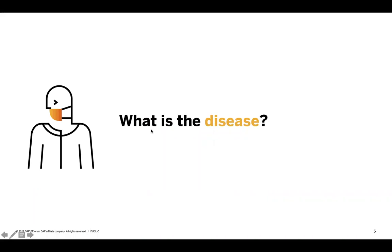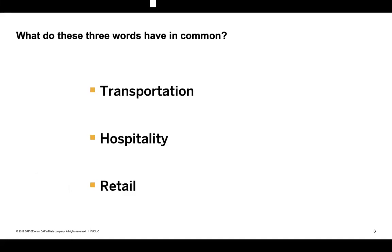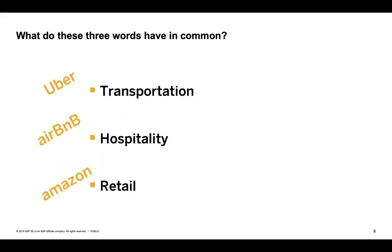What is the disease? Especially for the European listeners, it's already a little late in the day, so we want to start with a little riddle. This riddle helps bring you into the right mindset. What do these three words have in common? We have transportation, hospitality, and retail. Of course, all three are industries. All three have been heavily disrupted in the past years: transportation by Uber, hospitality by Airbnb, retail by Amazon.